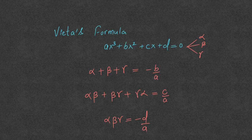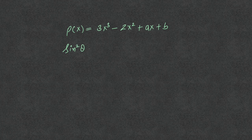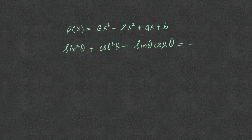Using these three identities, I can write the sum of roots for this cubic: sin²θ + cos²θ + sinθcosθ is equal to -(-2)/3, which equals 2/3.